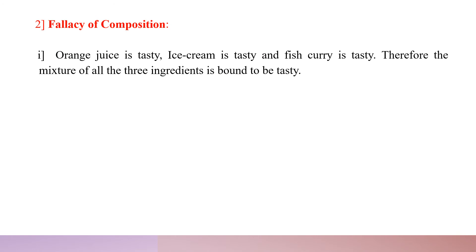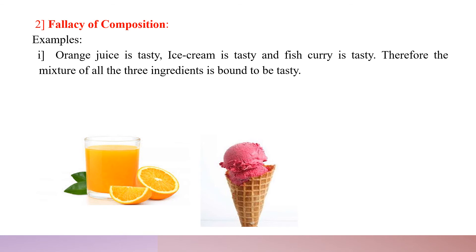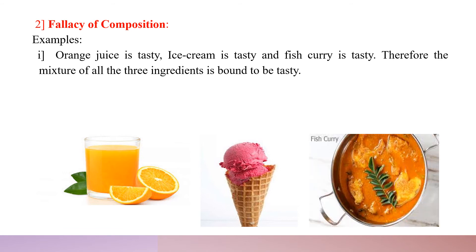Let us take some examples. Orange juice is very tasty when you drink it separately. Ice cream as a separate thing is very tasty, and fish curry is also very tasty if eaten singly. But when we mix all three ingredients together, then the mixture is bound to be tasty. When we argue in this manner, we commit the Fallacy of Composition.